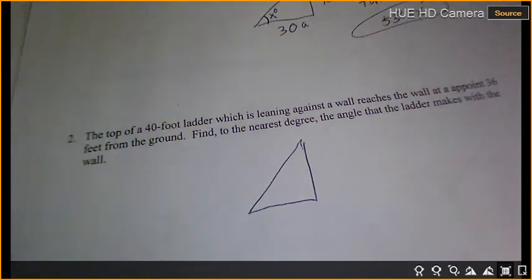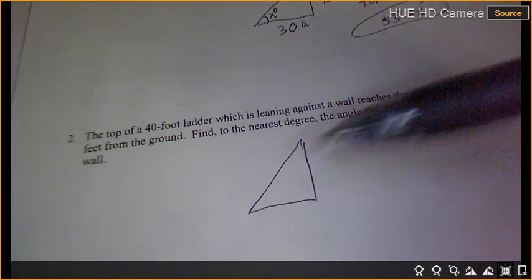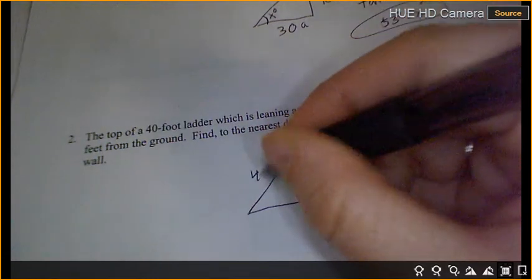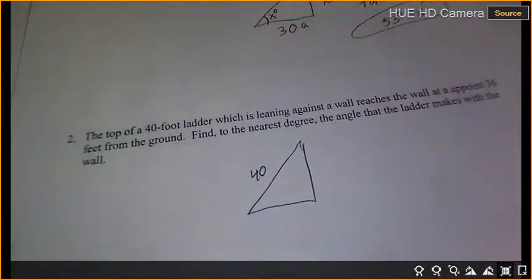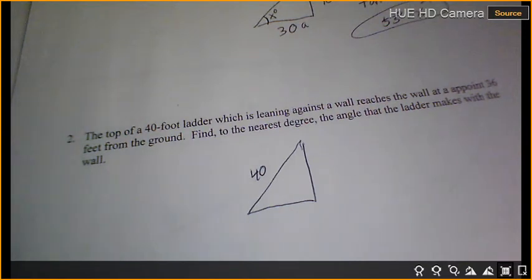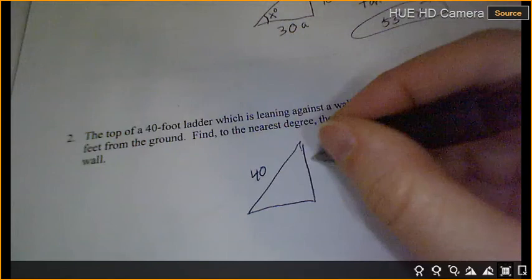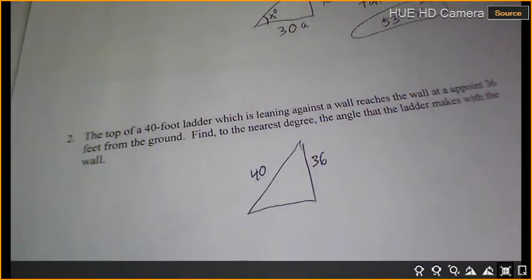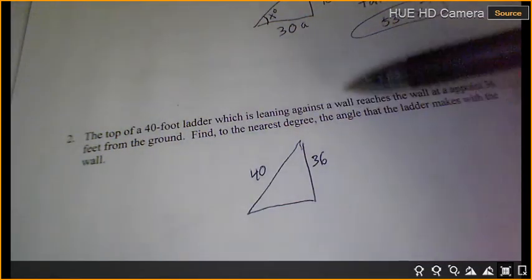Where does my 40 go? Hypotenuse. Ladders lean against the wall. Where does 36 go? Does it go straight up and down or along the ground? 36 on the wall. Straight up and down.